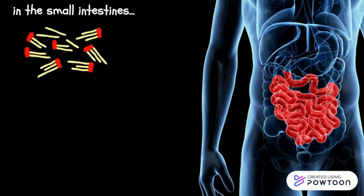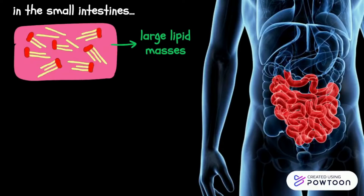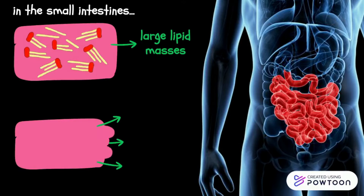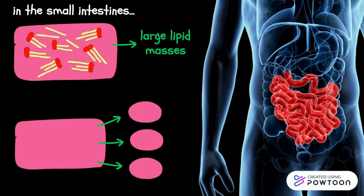Next, the fat molecules enter the small intestine from the stomach. Since the fat molecules are hydrophobic, they enter the small intestine in large lipid masses — basically a large fat. The large fat must be broken down into smaller molecules through the process of emulsification.